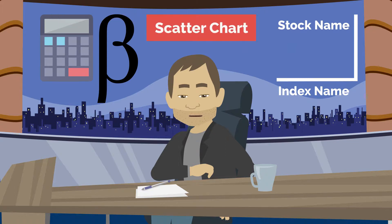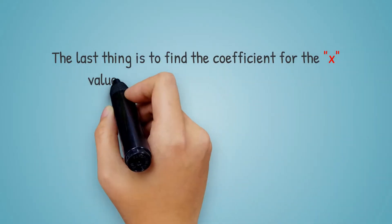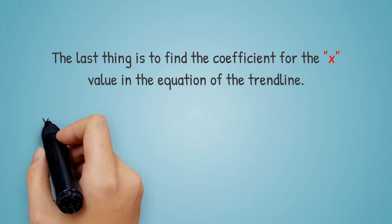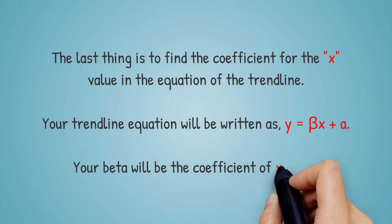After doing so, you should now add a trend line to your scatter chart. Make sure to choose a linear trend line, not the others. The last thing is to find a coefficient for the x-value in the equation of the trend line. Your trend line will be written as this. Your beta will be the coefficient of x-value.